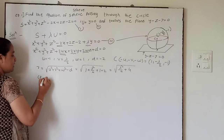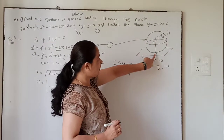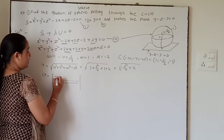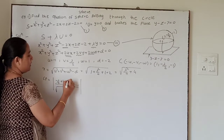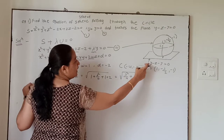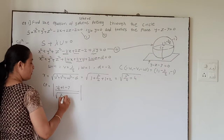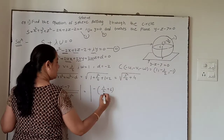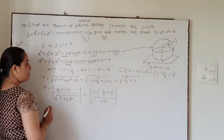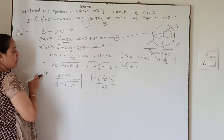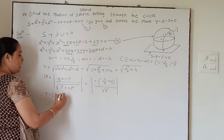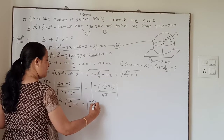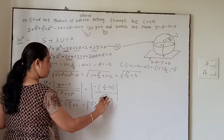Now we find the perpendicular distance from center C to the plane y − z − 7 = 0 using the perpendicular distance formula. That is |−λ/2 + 1 − 7| / √(1² + (−1)²), which gives |−λ/2 − 6| / √2. Using the tangency condition that radius equals perpendicular distance (r = Cp), we get √(λ²/4 + 4) = |λ/2 + 6| / √2.